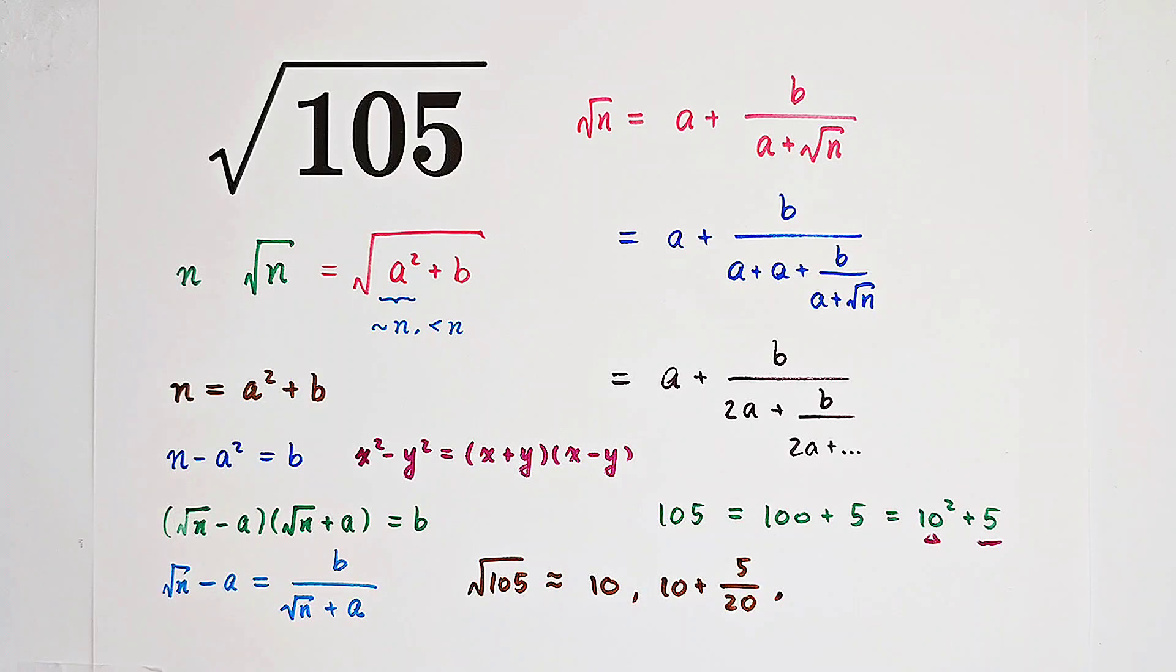If you're taking 2 fractional lines, then you'll get it's approximately equal to 10 plus 5 over 20 plus 5 over 20. And if you're gonna take 3 fractional lines, the approximation will be better, of course. The more fractional lines you will consider, the better the approximation will be.